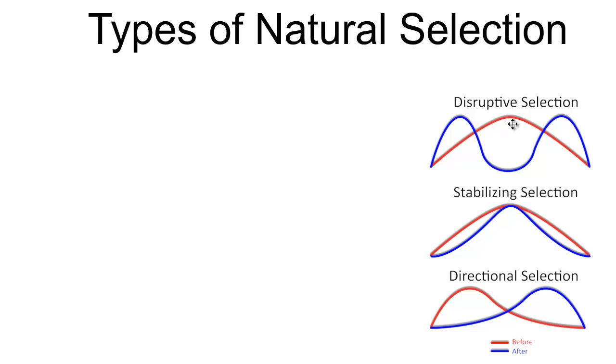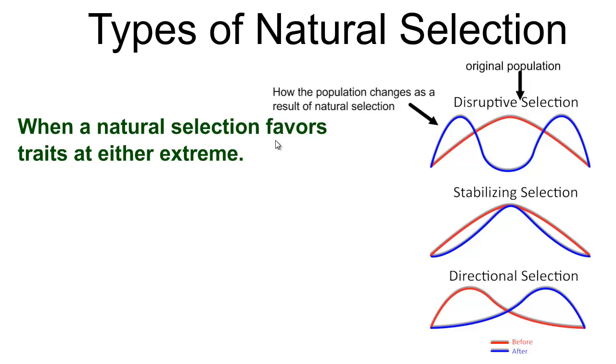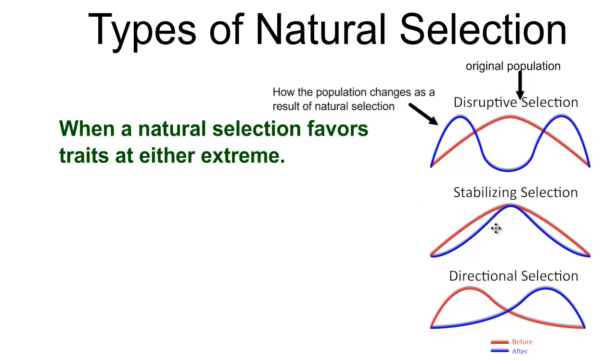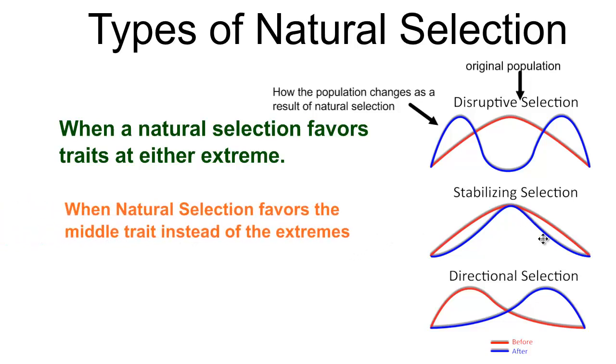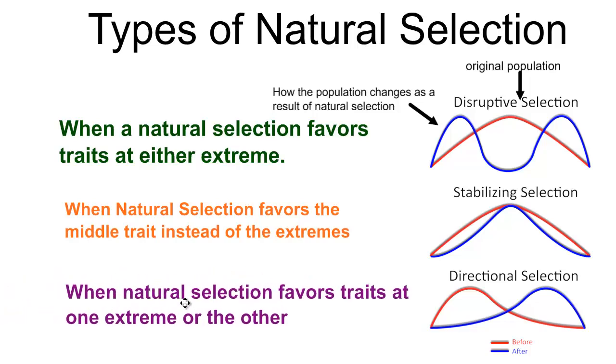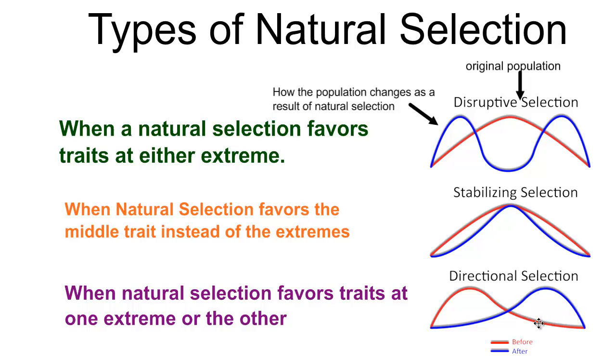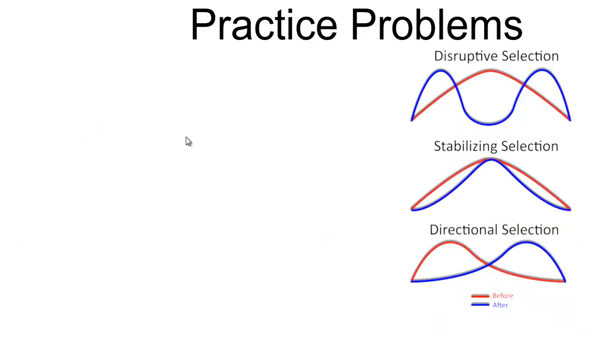So that's speciation. Now let's talk about the kinds of natural selection. And here we see three graphs of the three kinds of natural selection: disruptive, stabilizing, and directional. On these graphs the red line represents the original population before natural selection occurs. The blue line represents how the population changes as a result of natural selection. When natural selection favors traits at the extremes, we have disruptive selection. When natural selection favors organisms in the middle rather than those at the extremes, we call that stabilizing selection. And when natural selection favors those on one extreme, we call that directional selection.